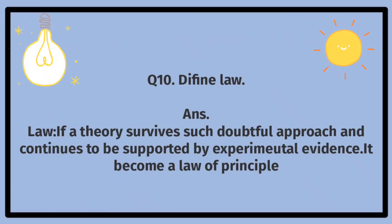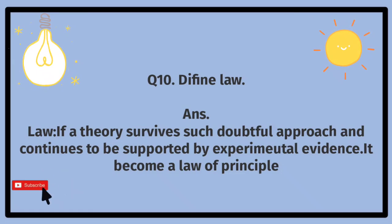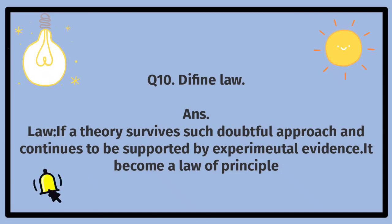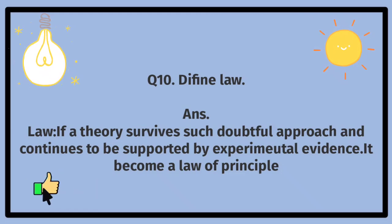Define law. If a theory survives a doubtful approach and continues to be supported by experimental evidence, it becomes a law or principle. Law ki wazahat karein. Agar koi theory istarah ke mushtabah nukta nazar se bach jata hai aur tajriatii shawahit uski hamayat jari rakhte hain, toh yeh principle ka law ban jata hai.